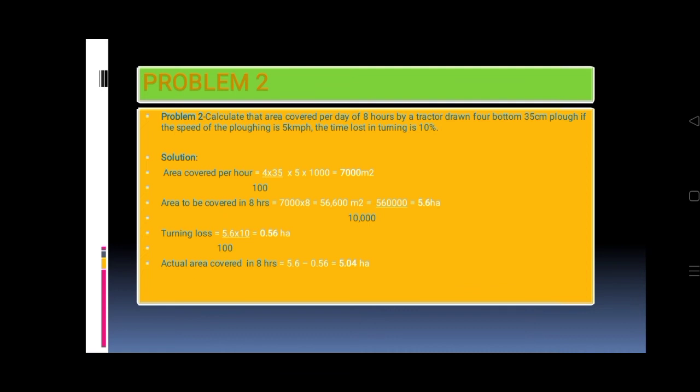Turning loss equals 5.6 times 10 divided by 100 equals 0.56 hectares. Actual area covered in 8 hours equals 5.6 minus 0.56 equals 5.04 hectares.